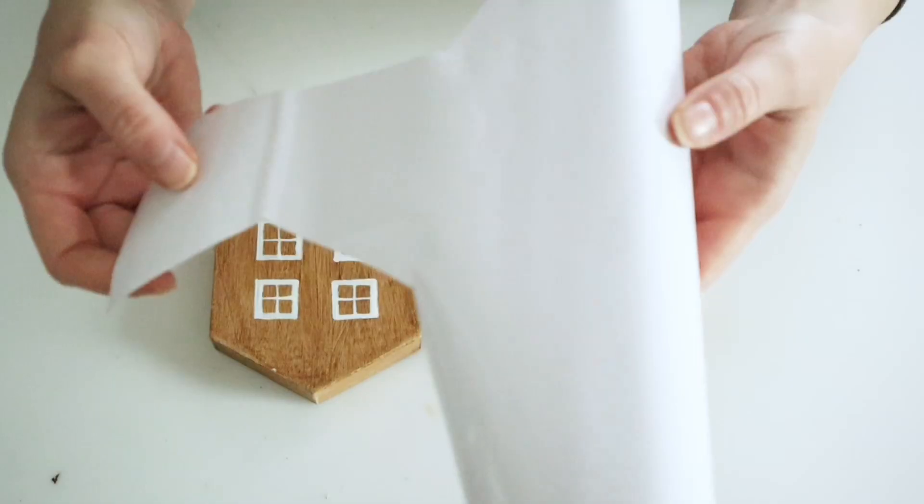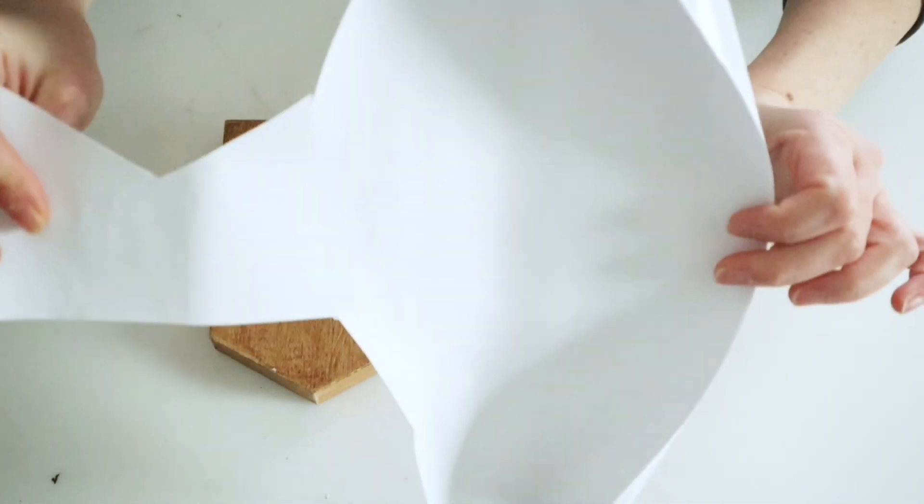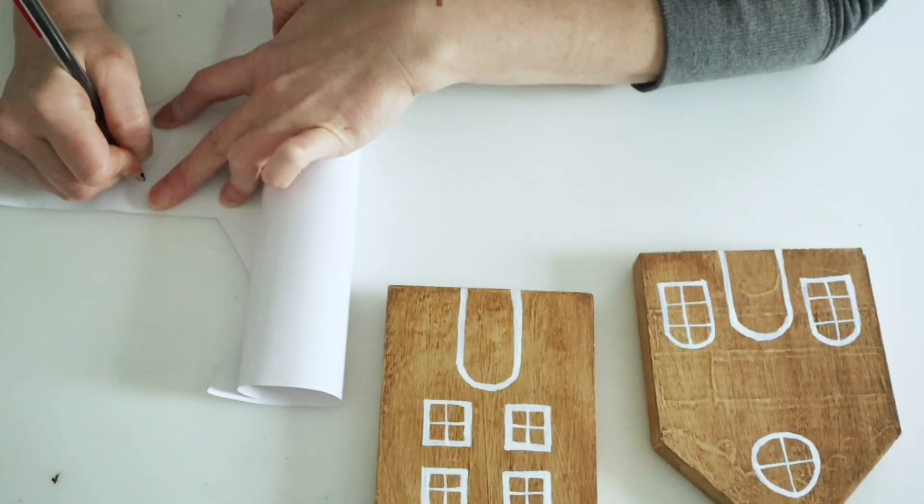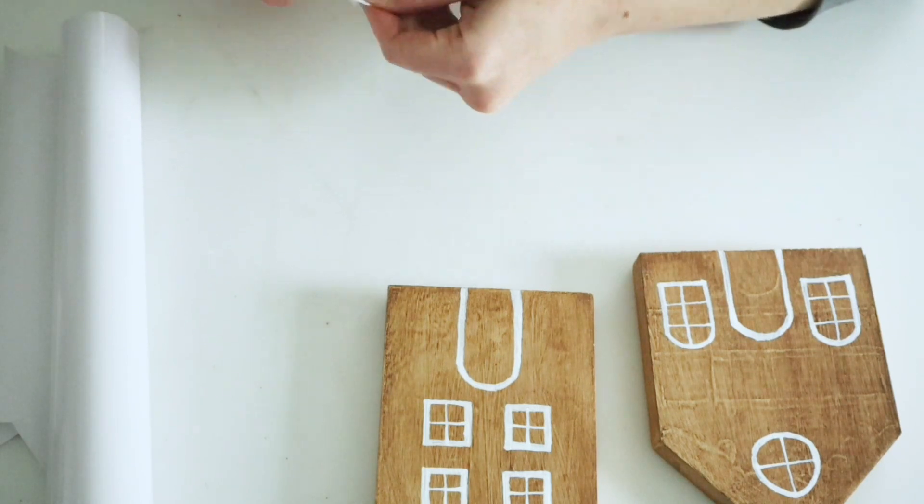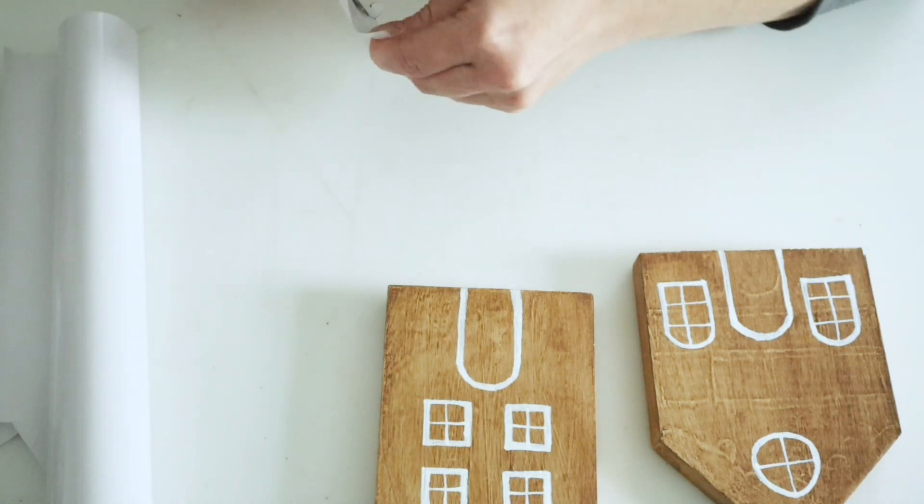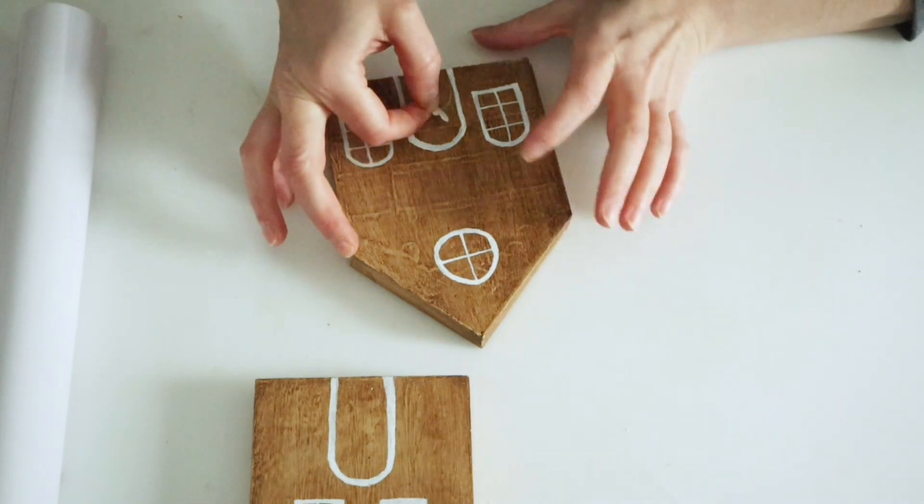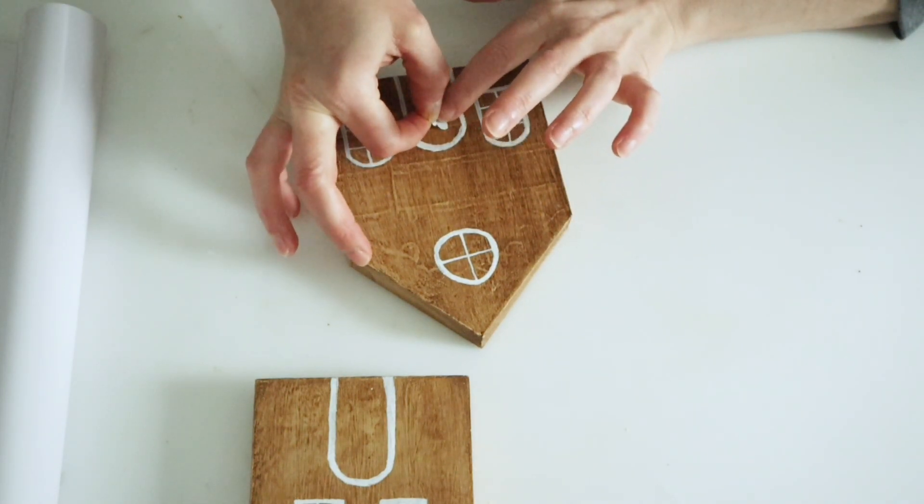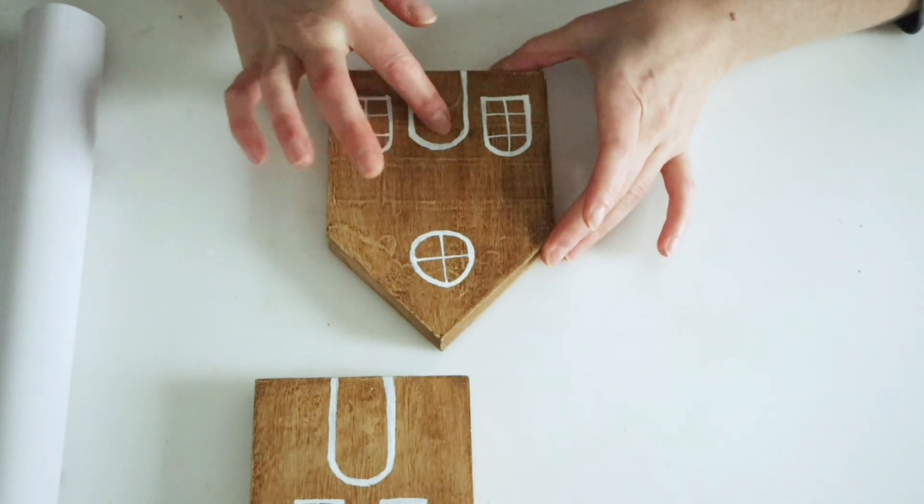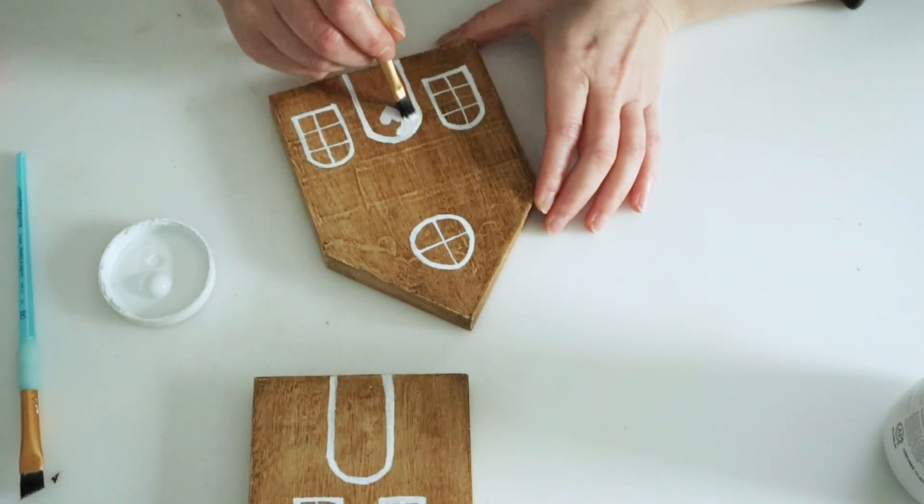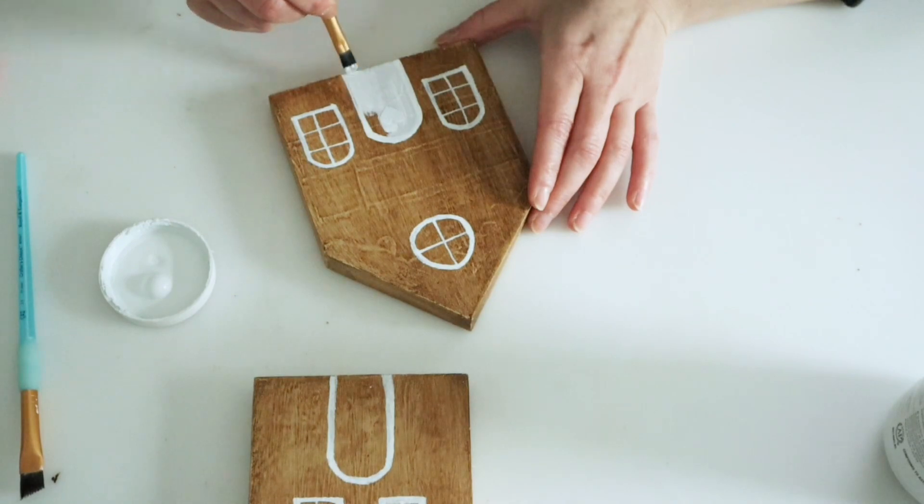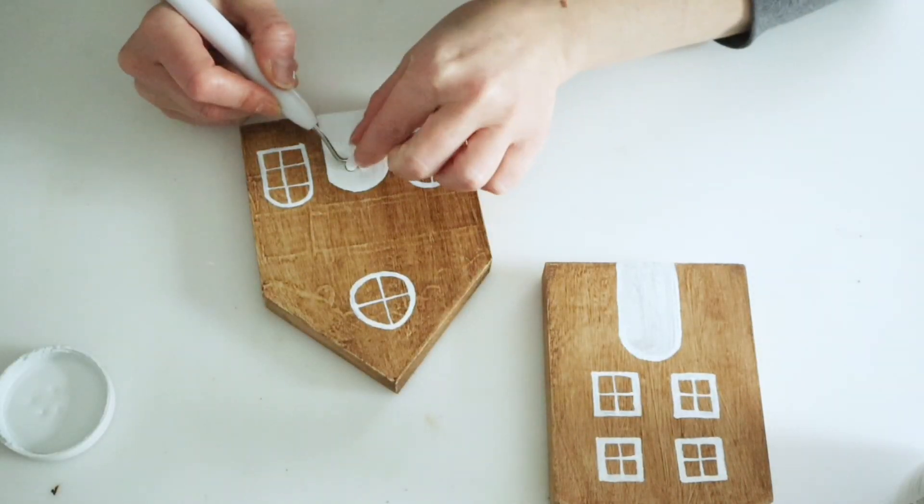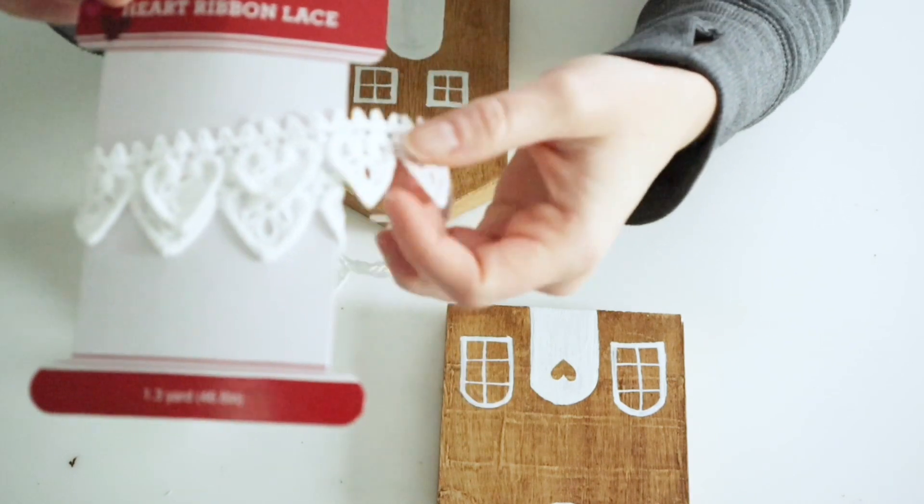Then I grabbed some of Dollar Tree's Cricut removable vinyl and I'm going to make a little heart shape out of this and I'm actually just going to cut this out and use this to paint over so that I can leave a little heart on one of the doors. Then I went back in and just used some of my white chalk paint and painted over that and I also painted the other door just plain white as well. I just used one of Dollar Tree's little Cricut tools to remove that heart and leave the imprint on the door.